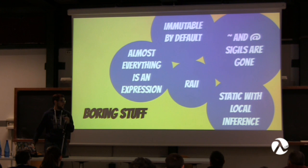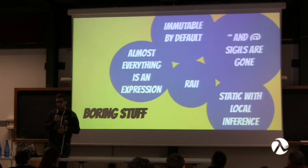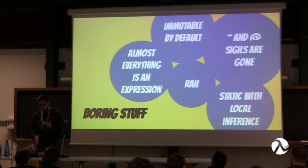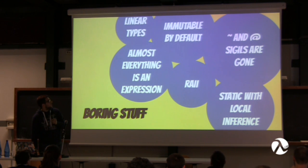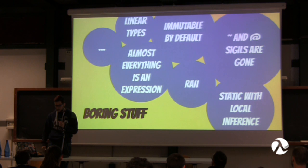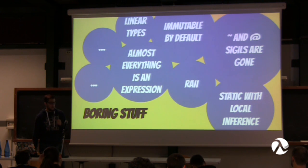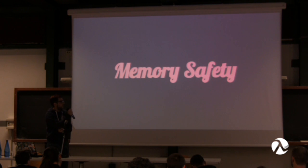Rust is statically typed with local type inference — it has a basic implementation of Milner's algorithm with some changes to match the language's needs. It's a linear type system, as I said, with built-in concurrency, memory safety, and a whole bunch of other features we'll discuss during this talk.